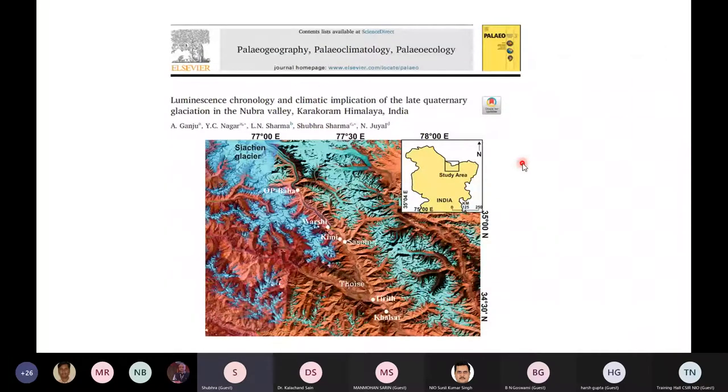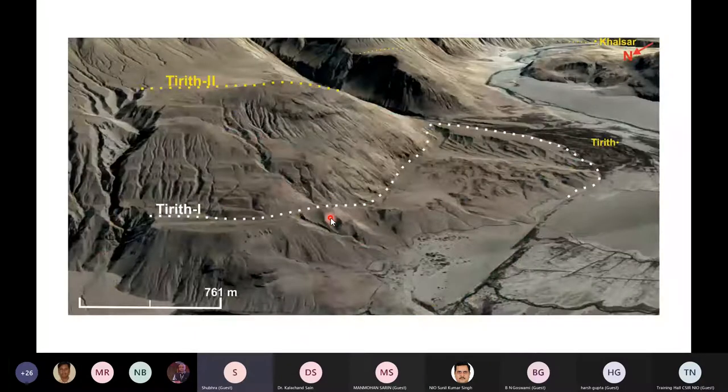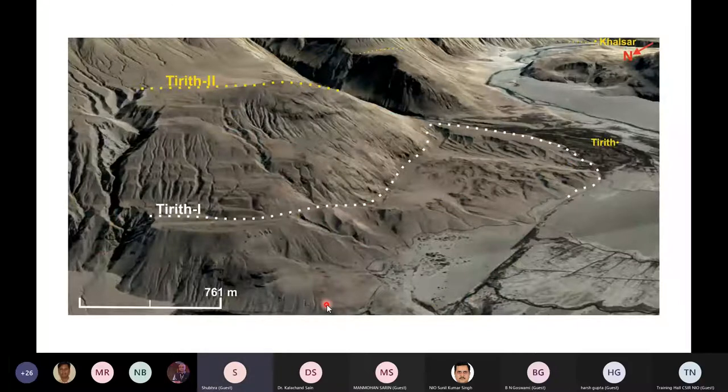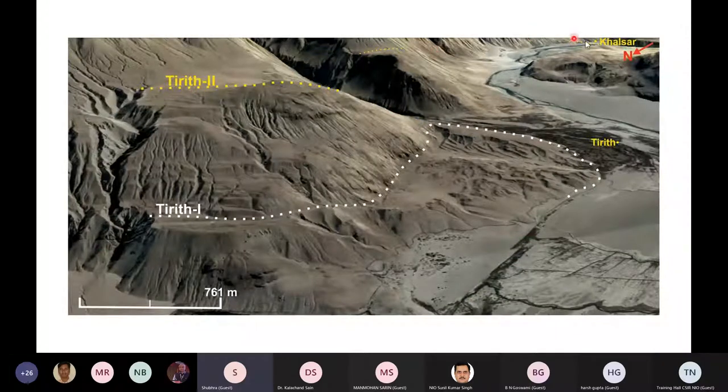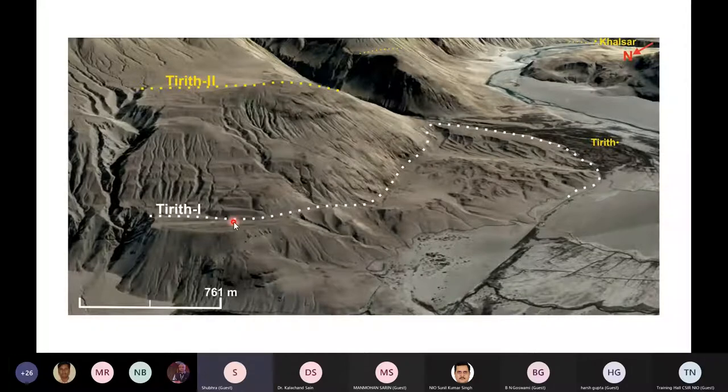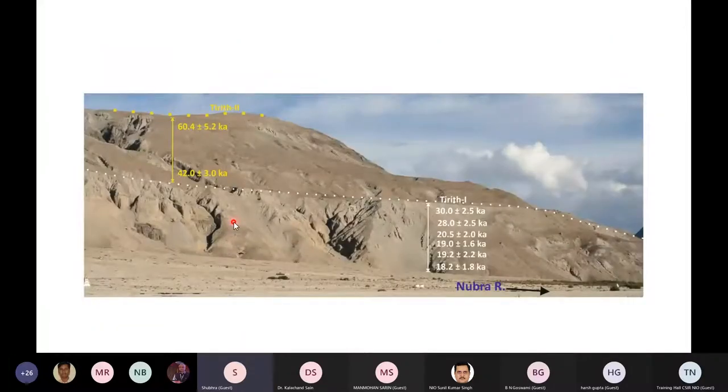So coming to the Karakoram Himalaya where modern precipitation is dominated by mid-latitude westerlies, this is the Landsat imagery where you can see Siachen glacier. From here the river Nubra emanates and we traversed along this valley documenting various landforms. So for example, this is a Google Earth imagery that shows two major advances in a form of extensive lateral moraines. We named these as Tirath 2 and Tirath 1. This is the field photograph of the same location. Tirath 2 was dated between about 60 to 40 kilo years using luminescence dating technique and it corresponds to the cooler phase of marine isotope stage 4.